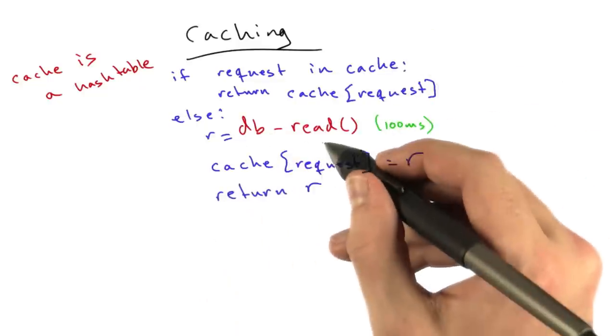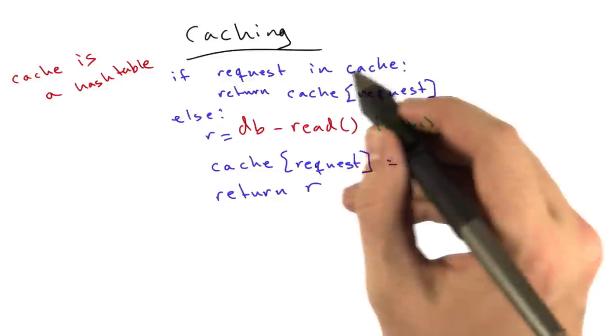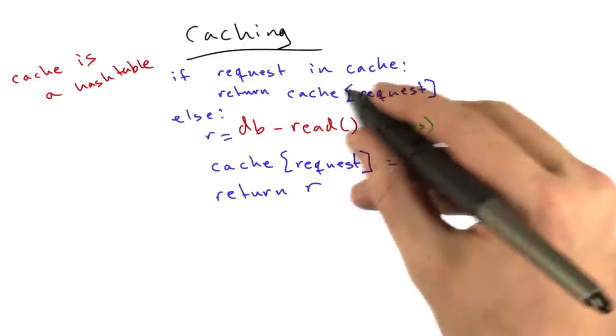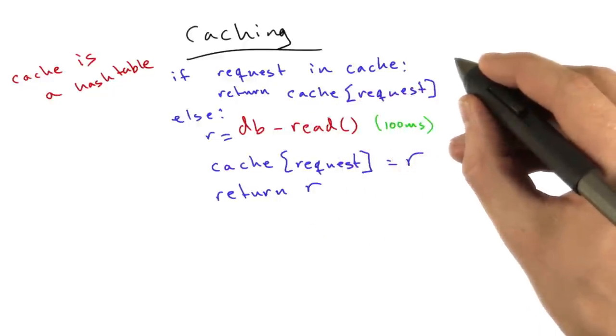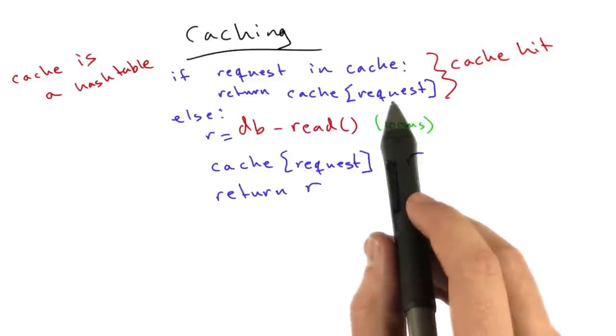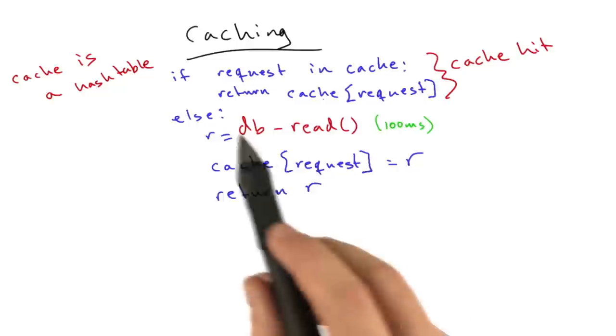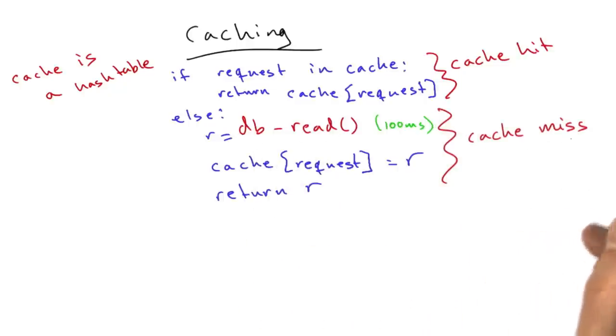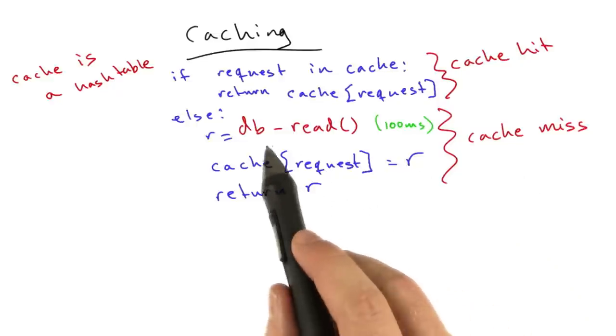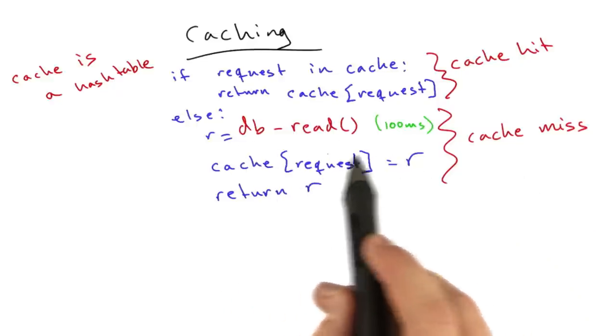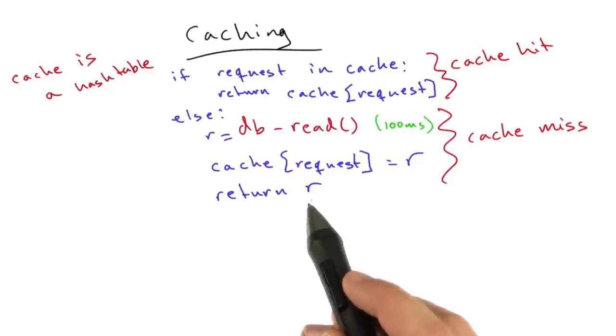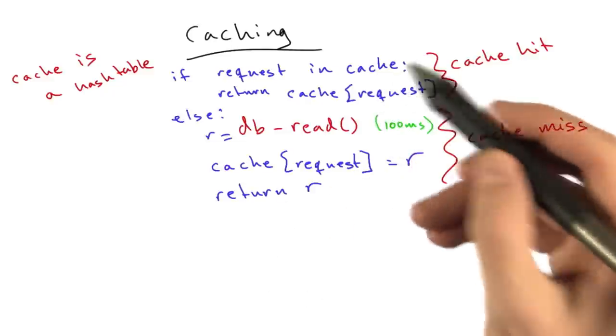So, basically, instead of calling db_read on every request, the first thing we do is check to see if that request is in our cache. And if it is, we return the cache value. This is called a cache hit, and only if that request isn't in our cache do we actually run our query. And this is called a cache miss. And what we do on a cache miss is we actually do our operation and store the result of that operation in our cache, and then return that result. So, future requests will just bounce off the cache.